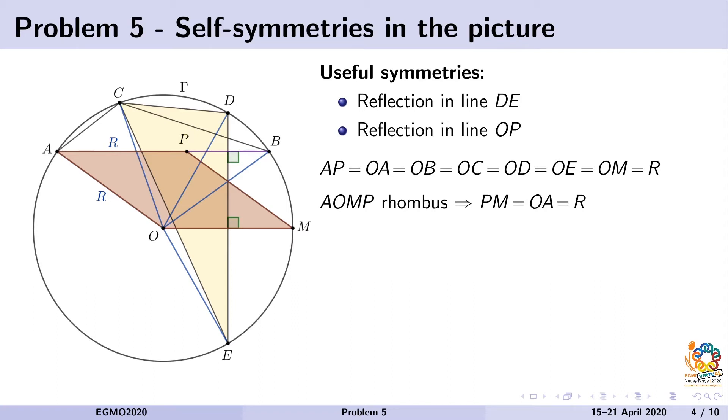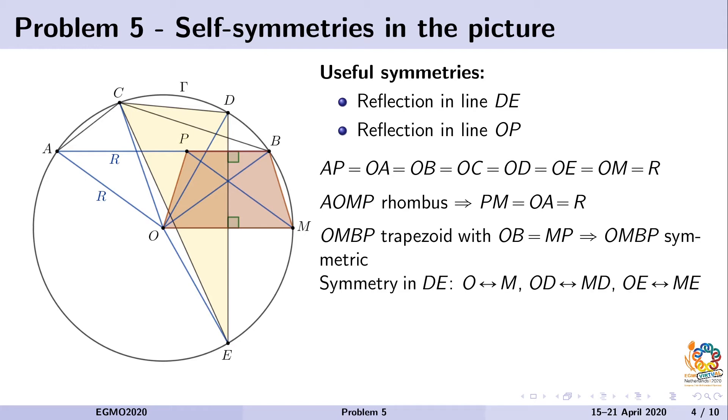So OMBP will be a symmetrical trapezoid, which shows us that the perpendicular bisector DE to segment PB will also be the perpendicular bisector to segment OM. In this case, we see that after symmetry over line DE, point P goes to point B,